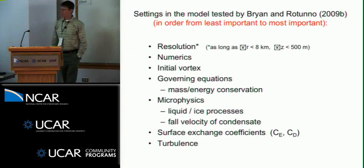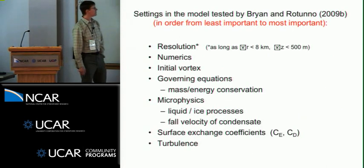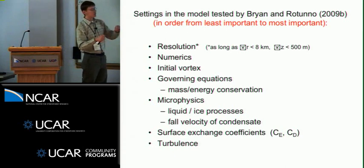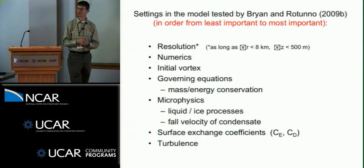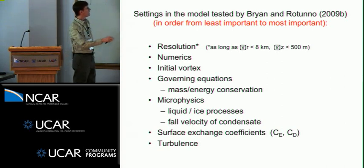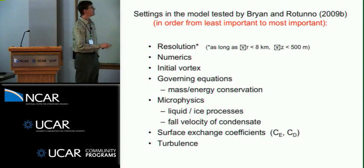Numerical models can produce intensities that have never been observed. So the point of this study by Bryan and Rotuno was to turn knobs in the model and see what aspect of the model is responsible for this, or what do I have to do to the numerical model to make it go away and is that consistent with observations. And I'm not going to go through all these things we studied, but in order from least important to most important for affecting that number, that V max, I'll let you read through the list here.